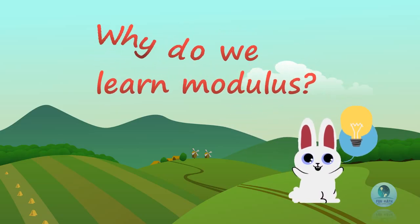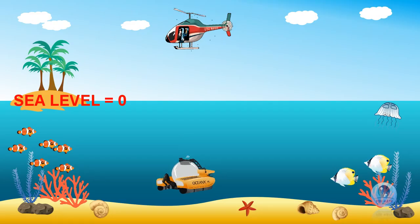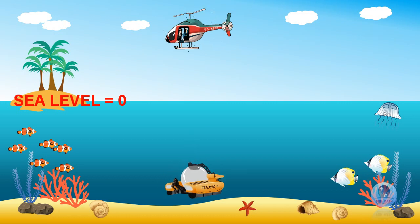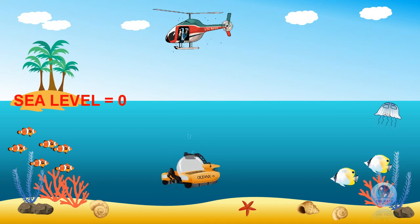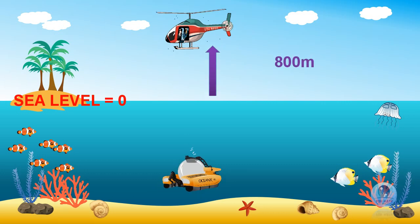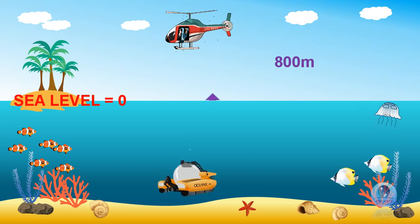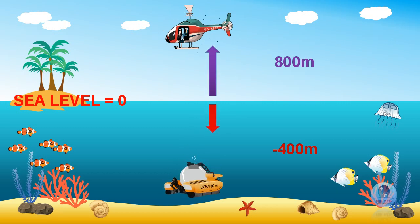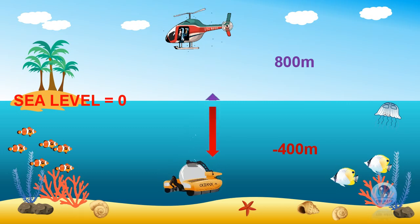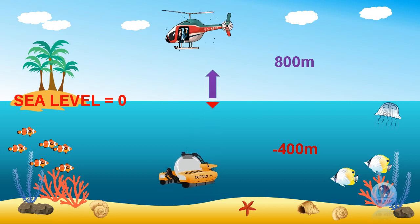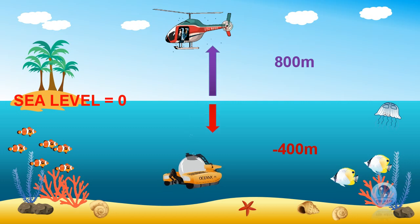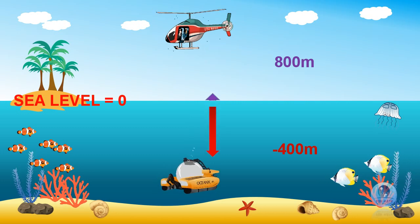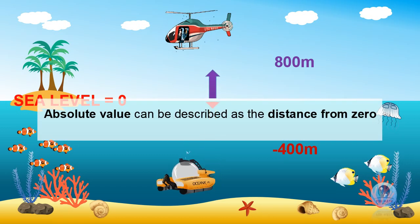Why do we need to learn modulus? Absolute value can often be found in our daily life. Let's look at this example. In this picture, you can see there is a helicopter and a submarine. Let's take the sea level as zero. The helicopter is located 800 meters above the sea level, while the submarine is located 400 meters below sea level. If we need to find the distance between the helicopter and the submarine, we only take the positive value, which is 800 meters plus 400 meters, and you get 1,200 meters. In conclusion, absolute value can be described as the distance from zero.